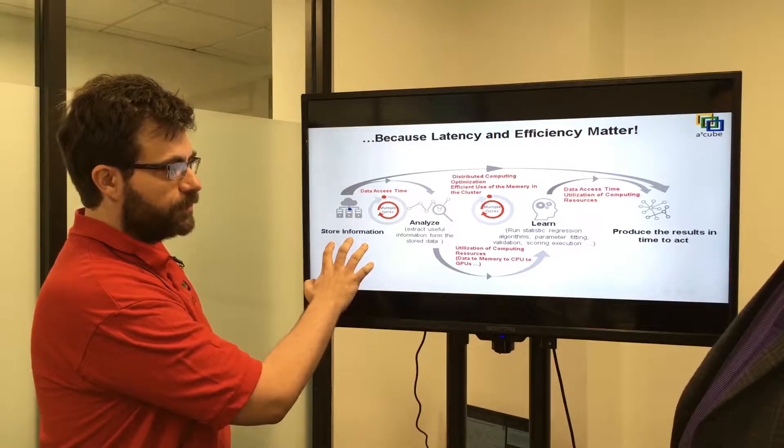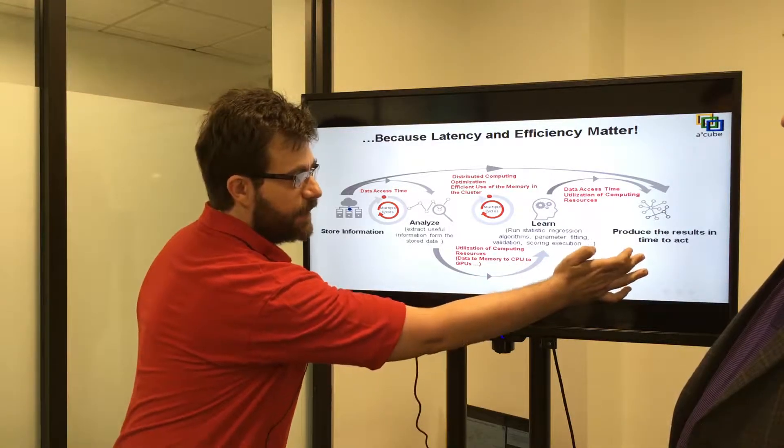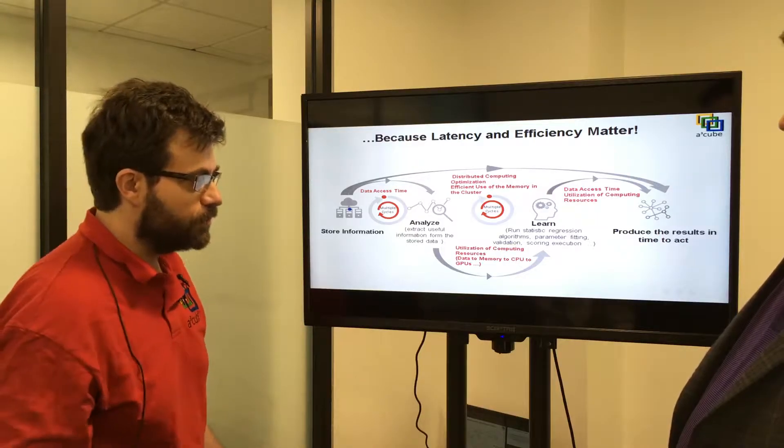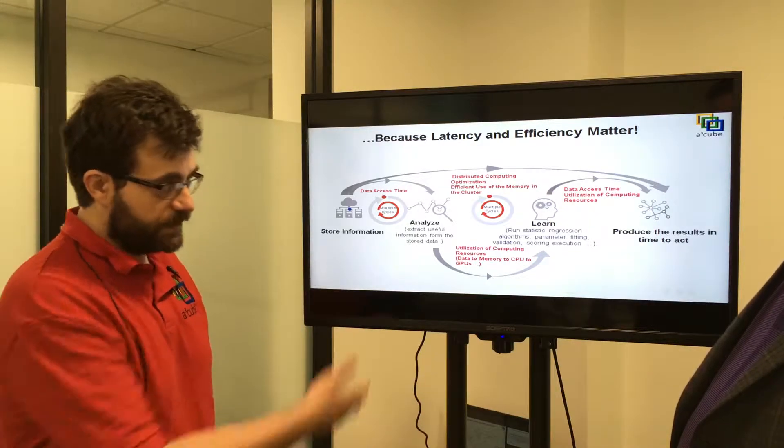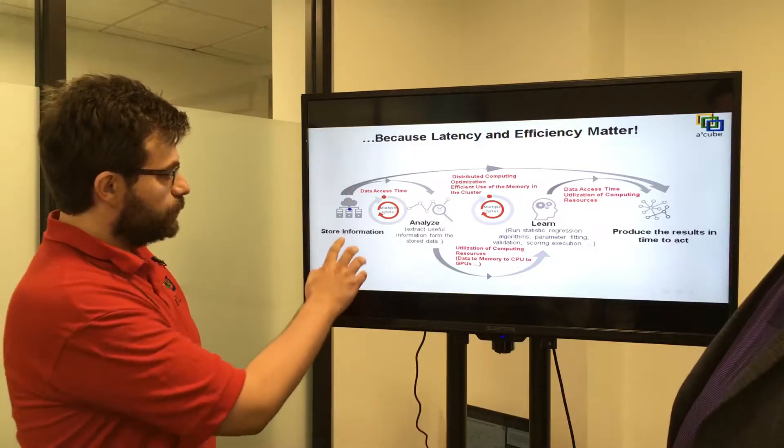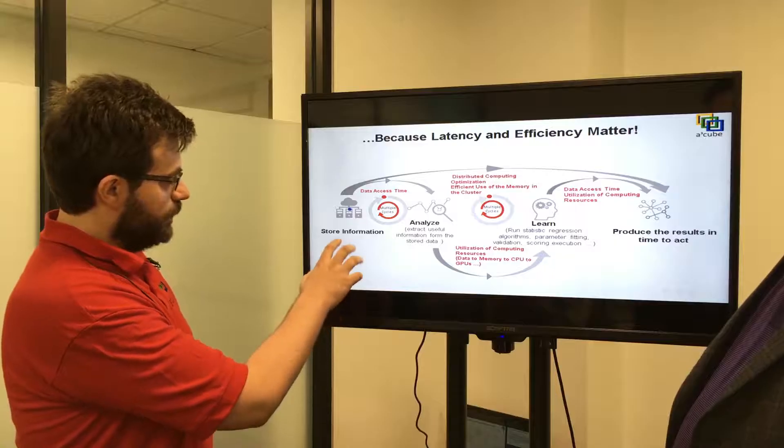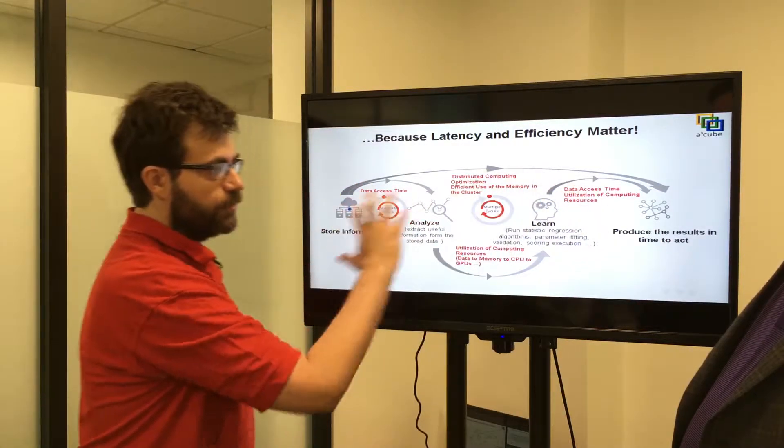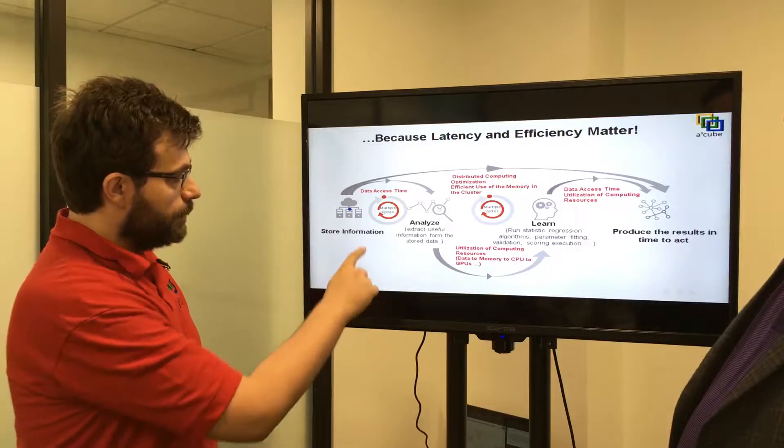If you look at this picture you see the model we can say data chain. So we start from storing information and we need to produce some result to act. To act means to take decisions, to make actions, or for example for a self-driving machine to drive by itself.